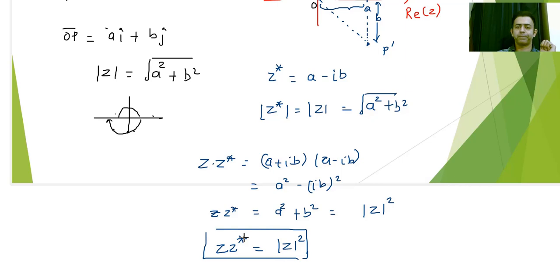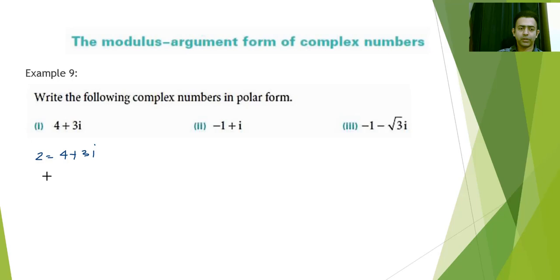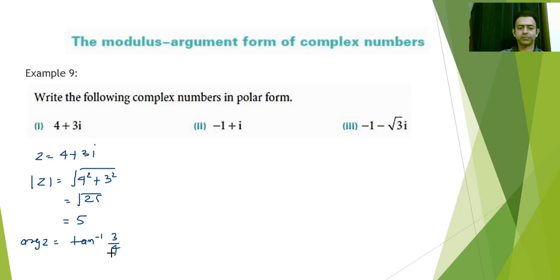Let us solve some questions on finding the magnitude and argument. Writing complex numbers in polar form means finding the magnitude and argument. For z = 4 + 3i: modulus of z = √(4² + 3²) = √25 = 5, and the argument of z = tan⁻¹(3/4), which is approximately 36.9 degrees or about 37 degrees.